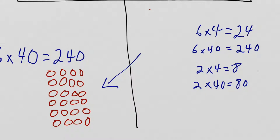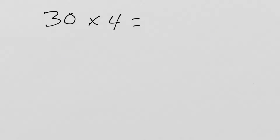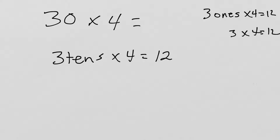And let's look at another example of that. 30 times 4. Well, another way that we could write 30 times 4 is 3 10s times 4. And we know that 3 1s times 4, 3 1s times 4 equals 12, because that's just 3 times 4. So, 3 10s times 4 would be 12 10s. And 12 10s is the same as 120.